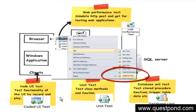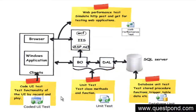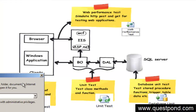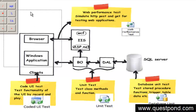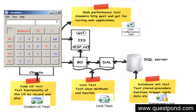What we will do now is pick up a very simple application — the calculator application that comes with the Windows operating system. We will record a simple test where the user enters the first number, presses the addition sign, enters the second number, and presses equal to. Then we will go and play these steps later in an automated way using the Coded UI test.